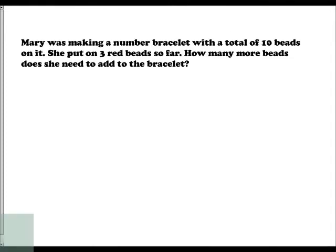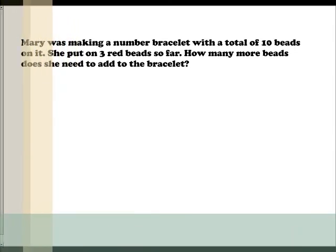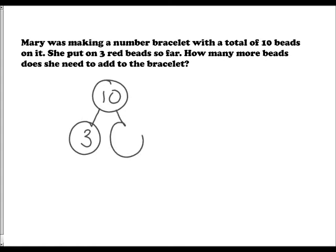Then we get more abstract with a word problem: Mary was making a number bracelet with a total of 10 beads. She put three red beads on so far — how many more does she need? Using a number bond, students know the total is 10 and one part is three, so they figure out that three plus seven equals the total, ten.